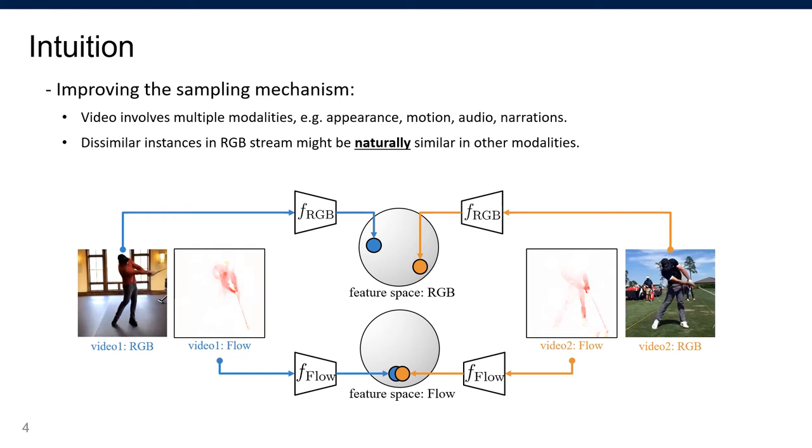It's also possible the other way around—in optical flow space, some samples are not similar, but they are similar in RGB space.